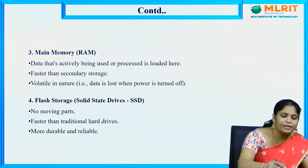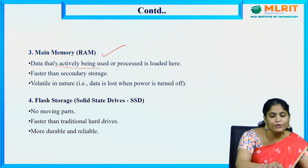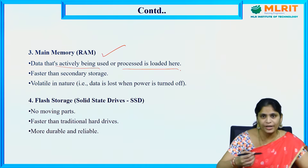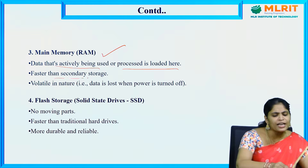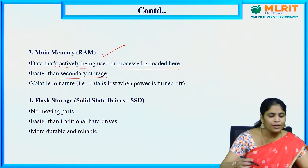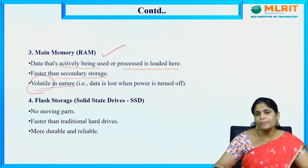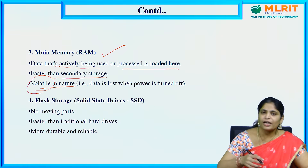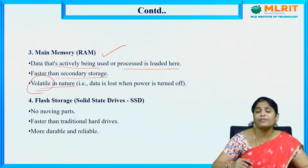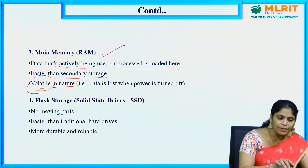Next is main memory, that is nothing but RAM. Data that is actively being used or processed is loaded here. It is faster than secondary storage in processing speed. RAM is volatile in nature — meaning if there is a power failure while accessing some data, that data will be lost. That is the major drawback of main memory.